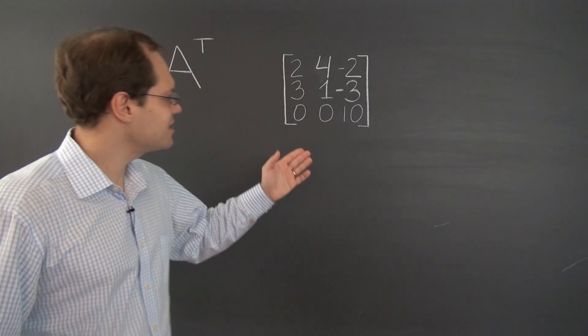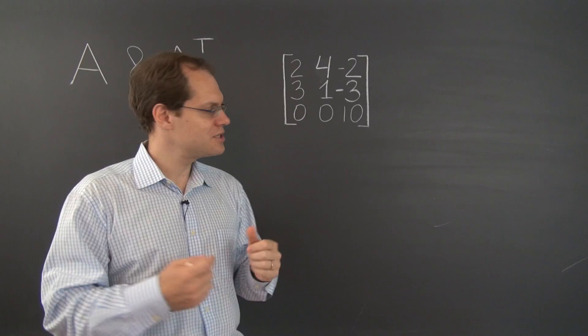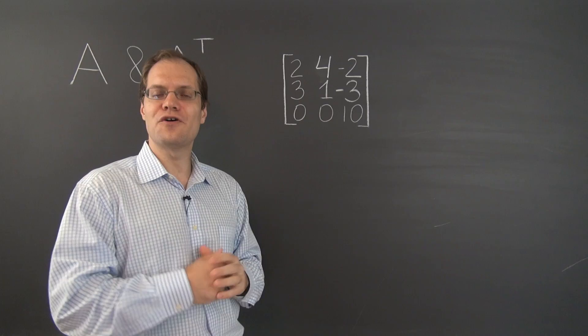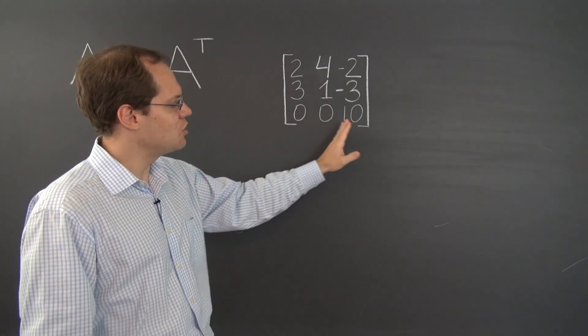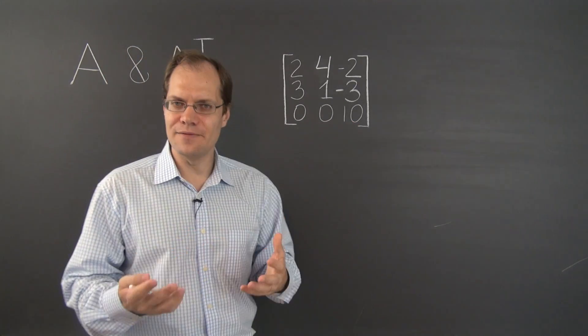For example, let's take a look at this matrix. What special properties do we notice in this matrix that can help us identify some of the eigenvalues? Well, the first thing we notice is that 10 is alone in its row and it's in the diagonal position. Why is that helpful?